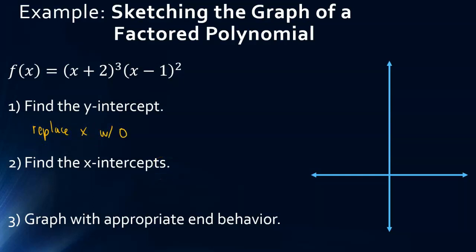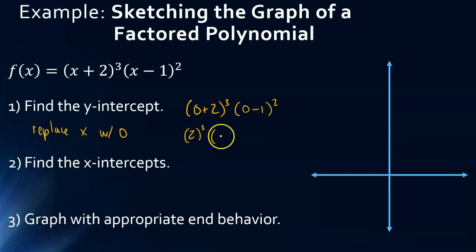If we do that, we would get 0 plus 2 quantity cubed — don't forget the exponents — times 0 minus 1 squared. So 0 plus 2 is just 2 cubed, and 0 minus 1 is negative 1 squared. Well, 2 cubed is 8, and negative 1 squared is positive 1. So our y-intercept for this one is going to be at positive 8.